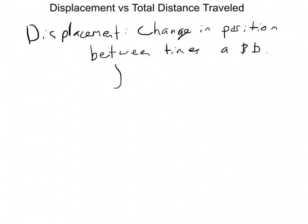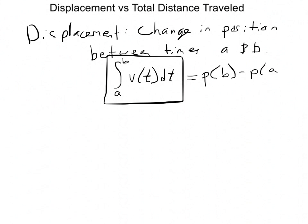The way we compute this is by doing the integral from A to B of the velocity function with respect to time. This should make sense because the integral of velocity is supposed to be position, so it's the position at B minus the position at A.